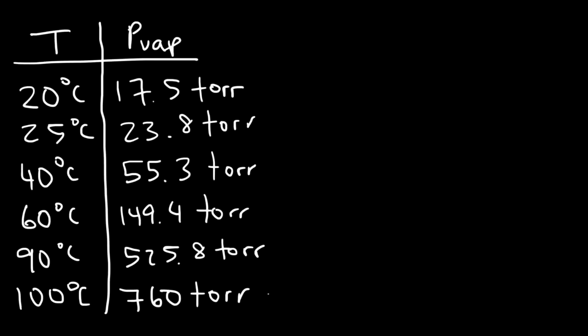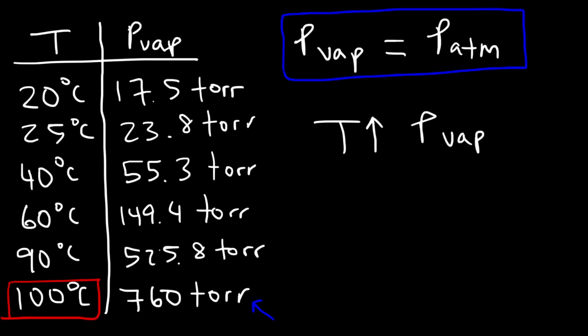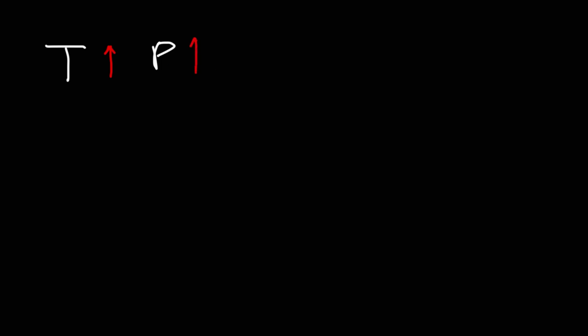This leads us to the definition of the normal boiling point of a liquid: the temperature at which the vapor pressure of the liquid is equal to the atmospheric pressure. At sea level, atmospheric pressure is 1 atm or 760 Torr, and at 100 degrees Celsius the vapor pressure of water is 760 Torr, so the normal boiling point of water at sea level is 100 degrees Celsius. As temperature increases, the vapor pressure increases, and this relationship is not a direct linear one — the pressure increases at a greater rate as temperature rises.